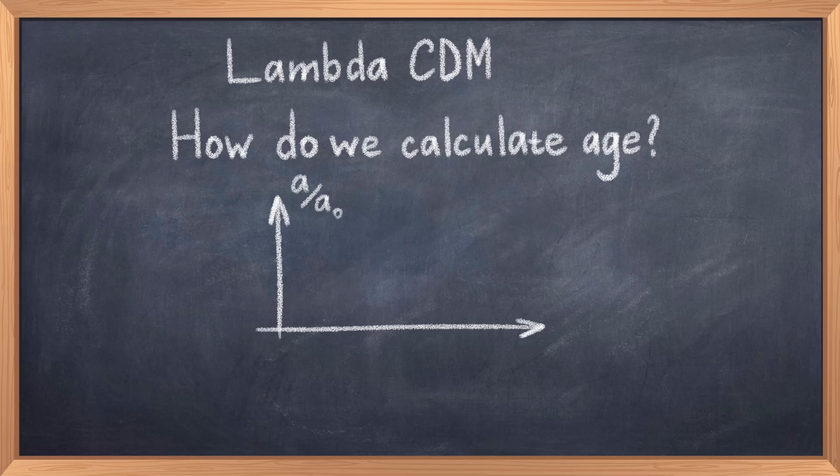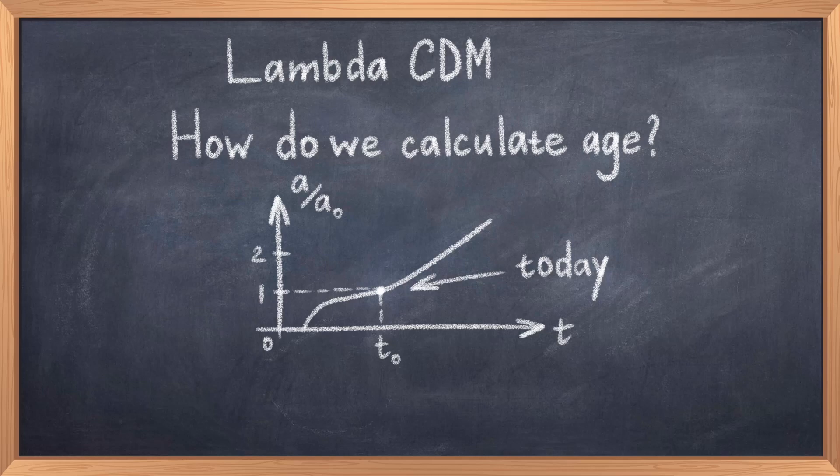The purpose of this video is to show how to obtain this result using calculus, a few approximations, and the latest data from the Planck satellite. This will hopefully demystify this number and is a good example of an application of the Lambda CDM model.